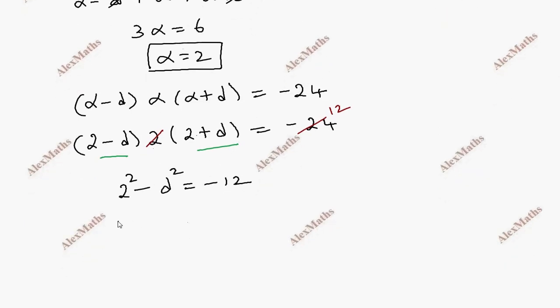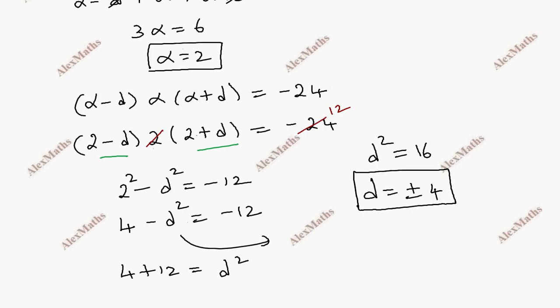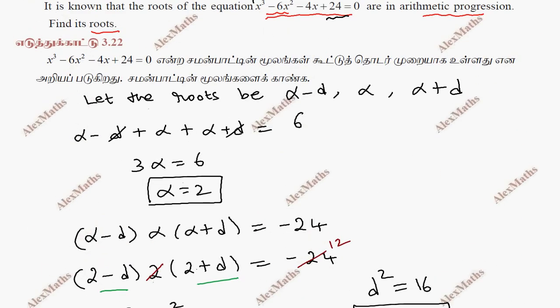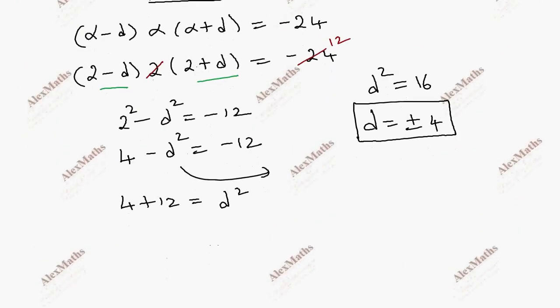So 4 minus d² equals -12, therefore d² equals 16, so d equals plus or minus 4. α is 2, d is plus or minus 4. We assume three root values: substitute α-d, α, α+d. Now two cases.